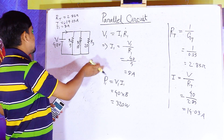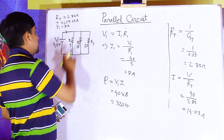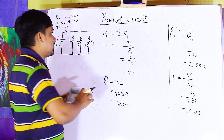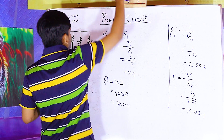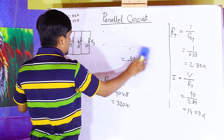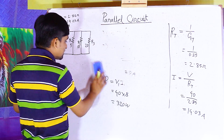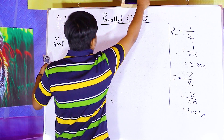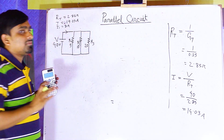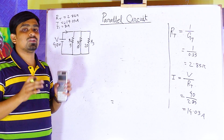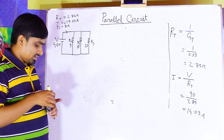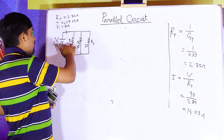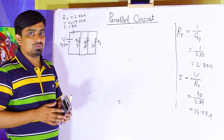Now, using the current divider rules, we look at the current across R2. The current divider rule is used for only two loads. Since this is a three-load combination, we will convert R1 and R3 into a single equivalent resistor.